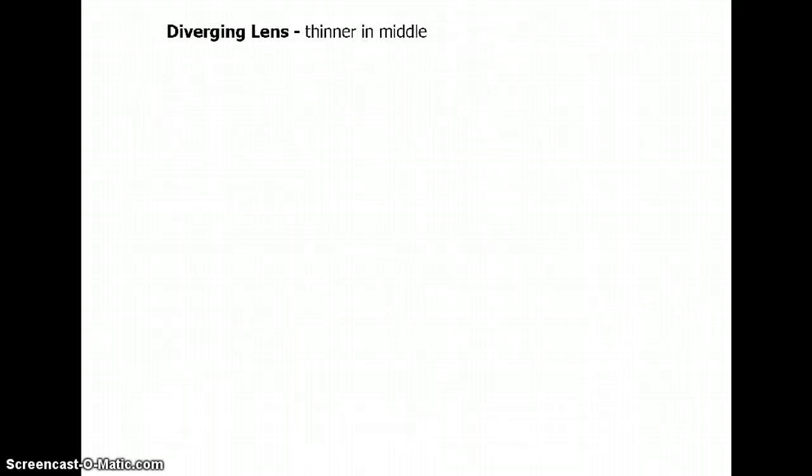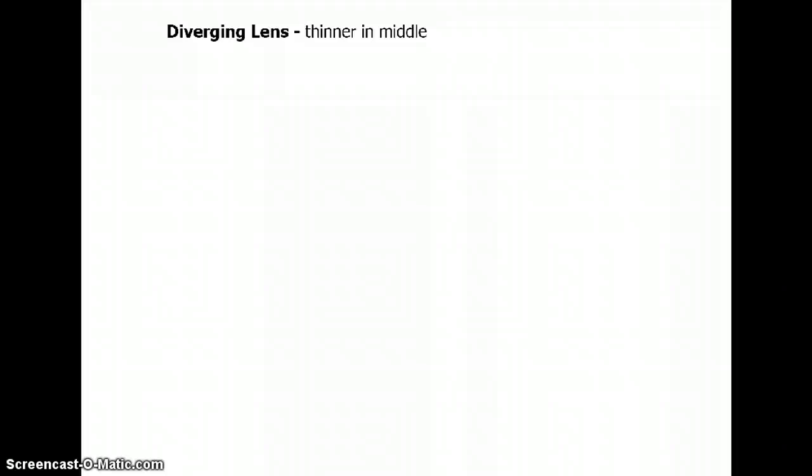So a diverging lens is basically any lens which is thinner in the middle than on the edges. So which one of these particular lenses would be diverging lenses? Any of them that are thinner in the middle than on the edge. These guys. Not these guys. They are thicker in the middle than on the edges. In fact, these are called converging lenses which we'll take a look at next and they're a little bit more complicated.